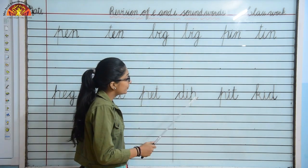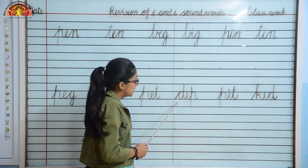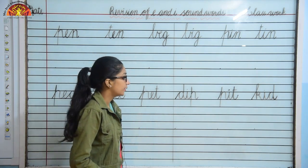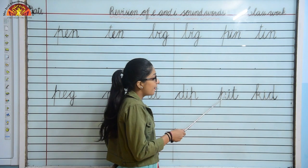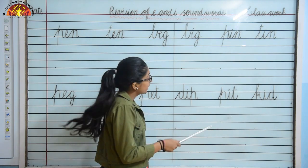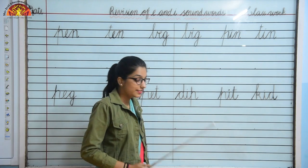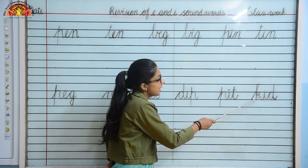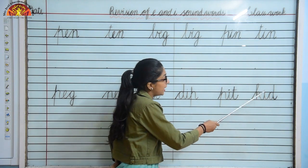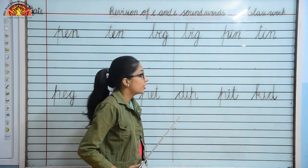Come to next line. D, I, P — Dip. This one is P, I, T — Pit. P, I, T — Pit. And last one is K, I, D — Kid. K, I, D — Kid.